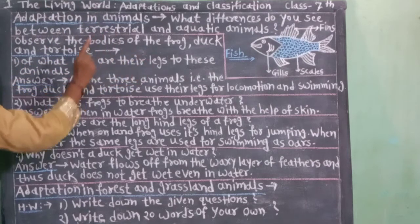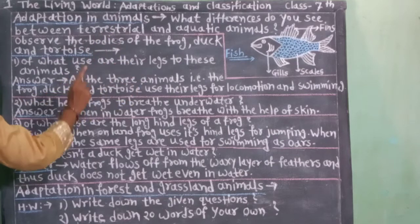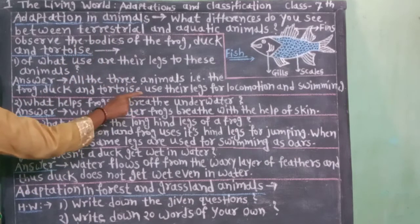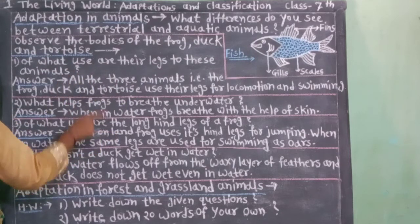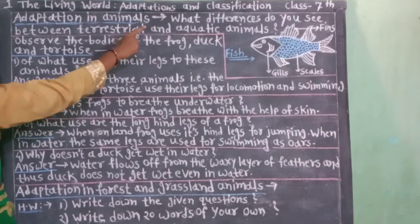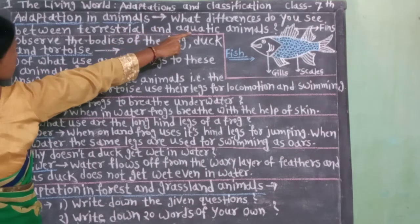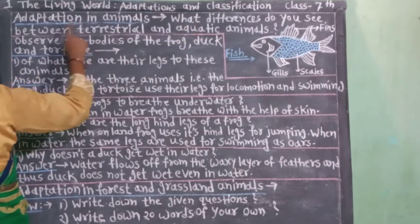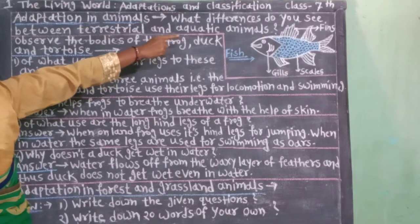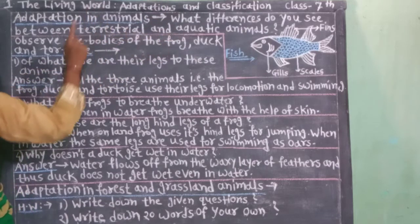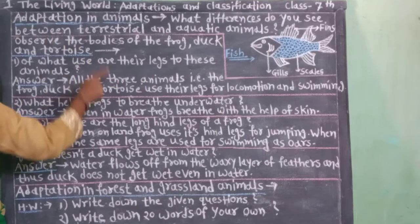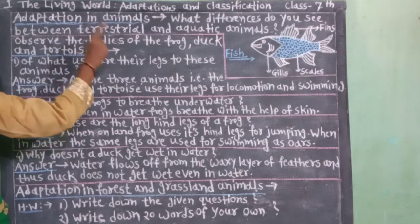Make a list of animals in your surroundings. Tum cha ajubajula asna rya, wa tumhi paile lya pranyan chi yaadi banwa. Then listen: what differences do you see between terrestrial and aquatic animals? Zami nivar wa paanyat rhana rya pranyan chi sharira var konta viglpana disune to?